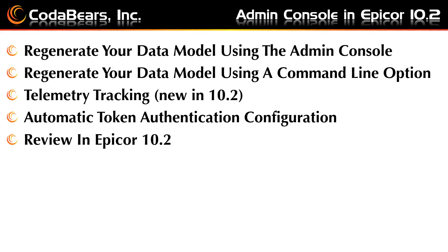Topics listed here are an outline of what I will cover today. Each topic will be discussed in more detail on the following slides. I will cover regenerating your data model using the Admin Council, regenerating your data model using a command line option, telemetry tracking which is new in 10.2, and automatic token authentication configuration, and then review a couple of these items in EPICOR 10.2 itself. The first two items can be done in earlier versions of EPICOR 10 also.